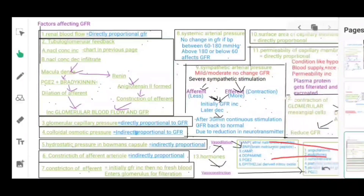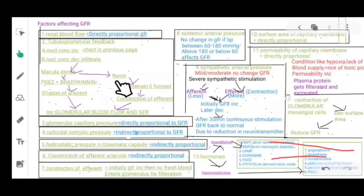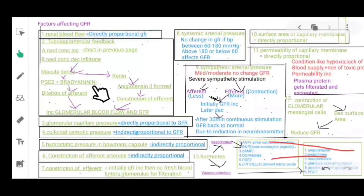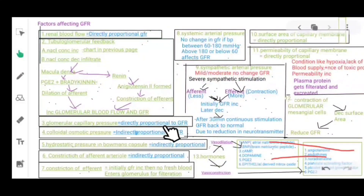But if sodium chloride concentration decreases, it again stimulates the macula densa — but here it secretes prostaglandin E2, bradykinin, and renin. Prostaglandin E2 and bradykinin lead to dilation of the afferent arteriole, while renin works through the renin-angiotensin system to produce angiotensin 2, which leads to constriction of the efferent arteriole, increasing glomerular blood flow and GFR.